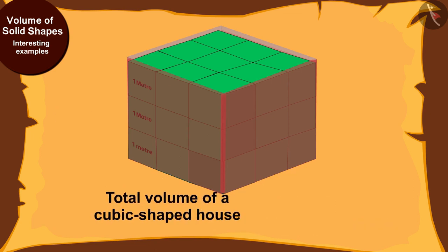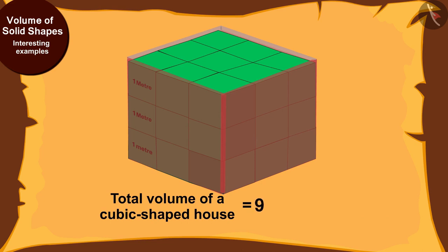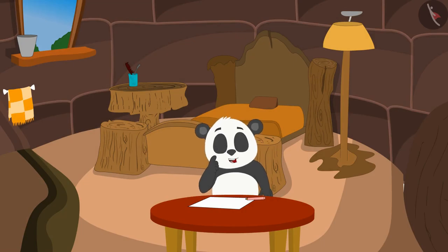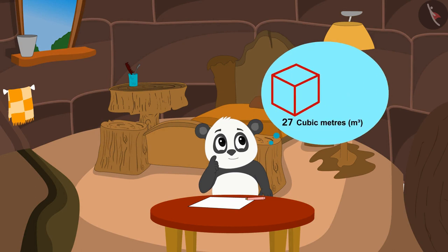This means the total volume of a cubic shaped house will be 9 times 3, that is equal to 27 cubic meters. Well, the volume of each house is equal to 27 cubic meters.